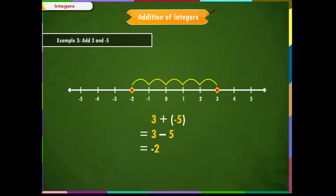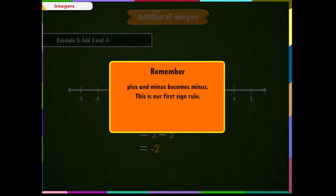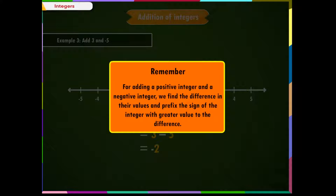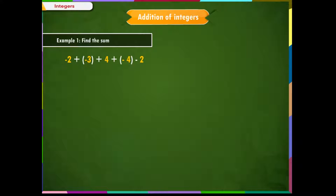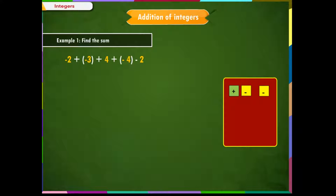Remember the important points: 1. Plus and minus becomes minus — this is our first sign rule. 2. For adding a positive integer and a negative integer, we find the difference in their values and prefix the sign of the integer with greater value to the difference. Let us do a small recap: for adding two negative numbers, we add their values and prefix minus sign to their sum.